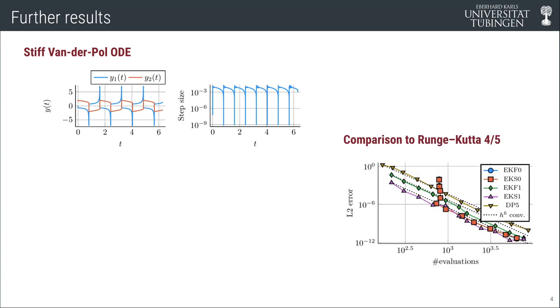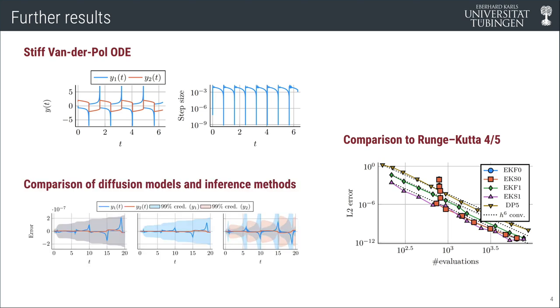We also compared probabilistic ODE solvers to a classic Runge-Kutta 4/5 method and we observe convergence rates of similar order. But again, the probabilistic ODE solver returns not just point estimates, but posterior distributions. And we compare these uncertainties for the different calibration methods and different approximate inference algorithms.